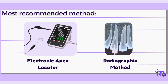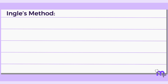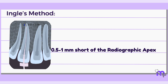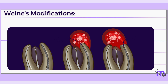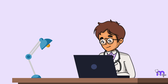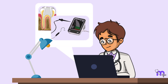In Ingle's method, the file is always placed 0.5 to 1 mm short of the radiographic apex. Wine's modifications: periapical bone resorption — 1.5 mm short of the radiographic apex; apical root resorption — 2 mm short of the radiographic apex. Stay tuned to find out how we go about determining root canal length without radiographs.